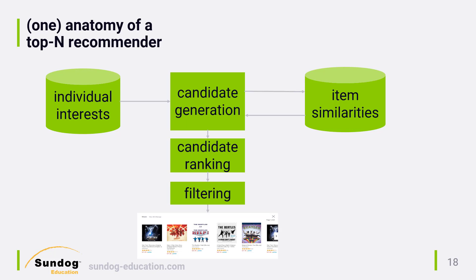Here's one way a top N recommender system might work — there are many ways to do it. Generally, you start with some data store representing the individual interests of each user, for example their ratings for movies they've seen or implicit ratings such as items they've bought in the past. In practice, this is usually a big distributed NoSQL data store like Cassandra, MongoDB, or Memcache, because it has to serve lots of data with very simple queries. Ideally this interest data is normalized using techniques such as mean centering or Z-scores to ensure the data is comparable between users.